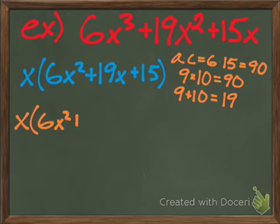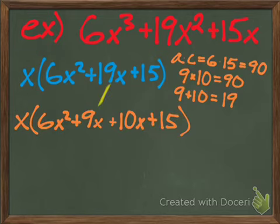You will rewrite the problem as the x as your GCF already on the outside, and then you will split your 19x into 9x and 10x.